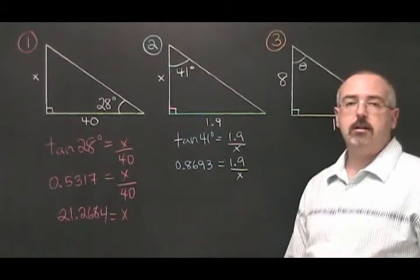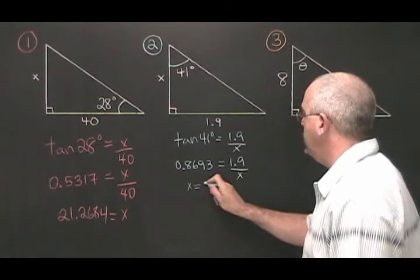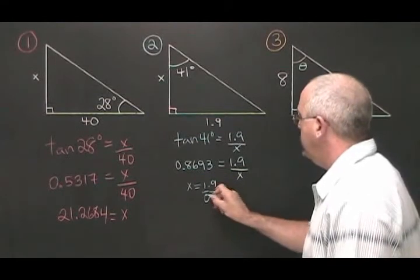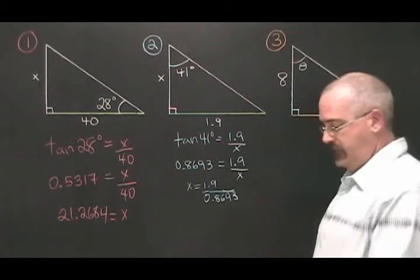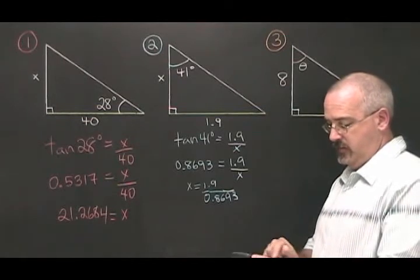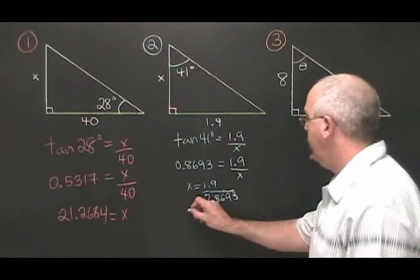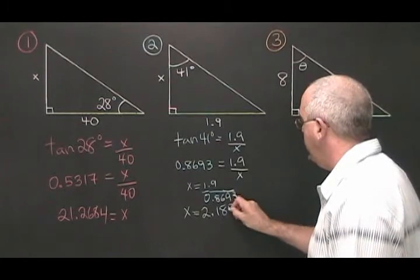Since our variable is in the denominator, we do the trade. X equals 1.9 divided by 0.8693, which equals 2.1857.